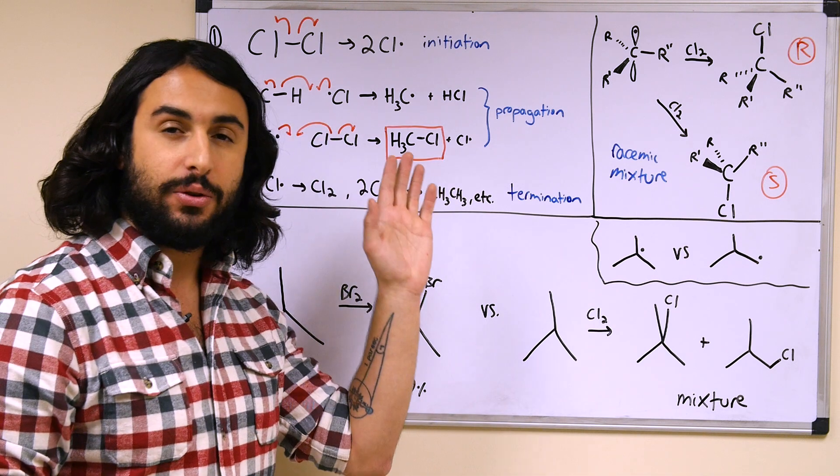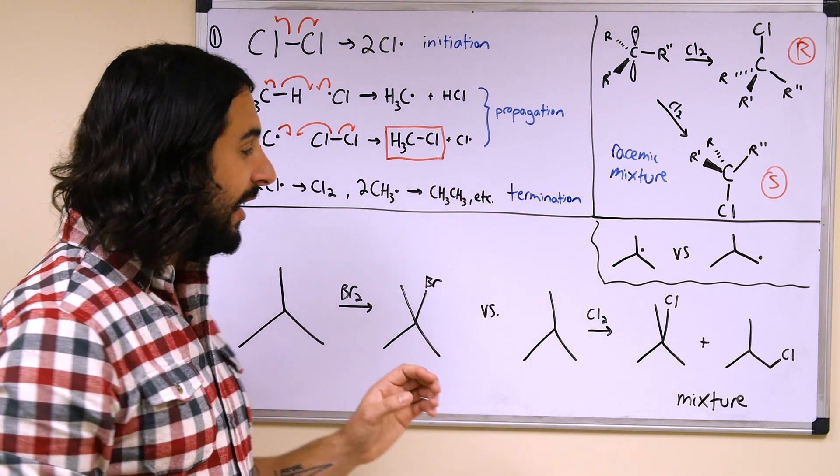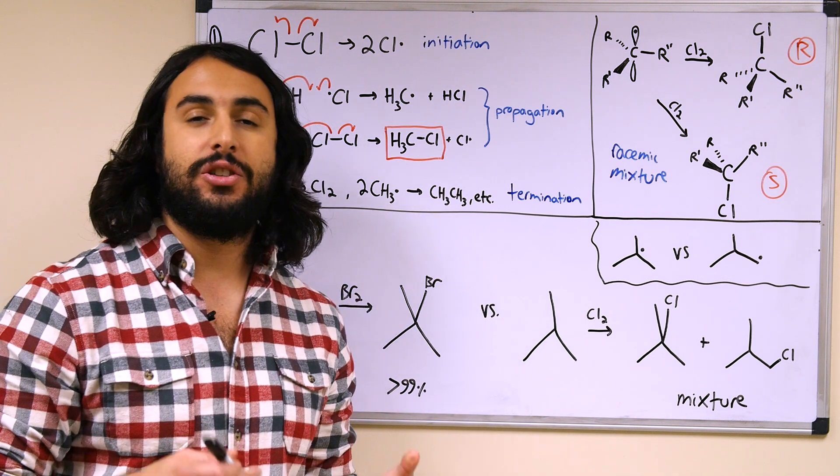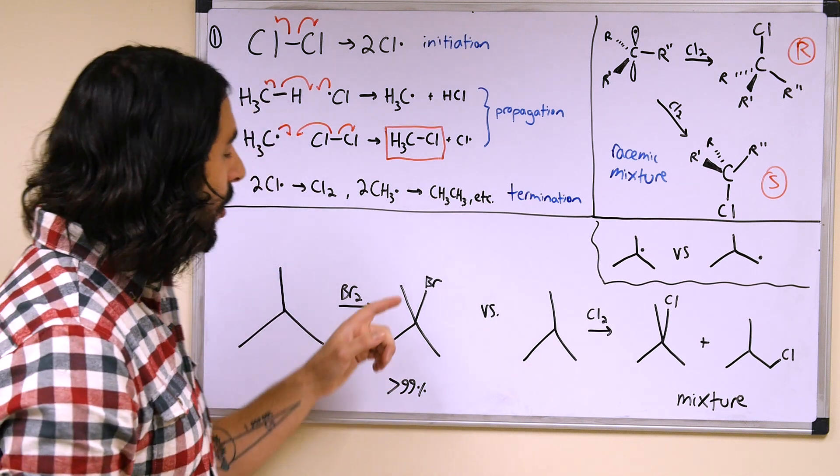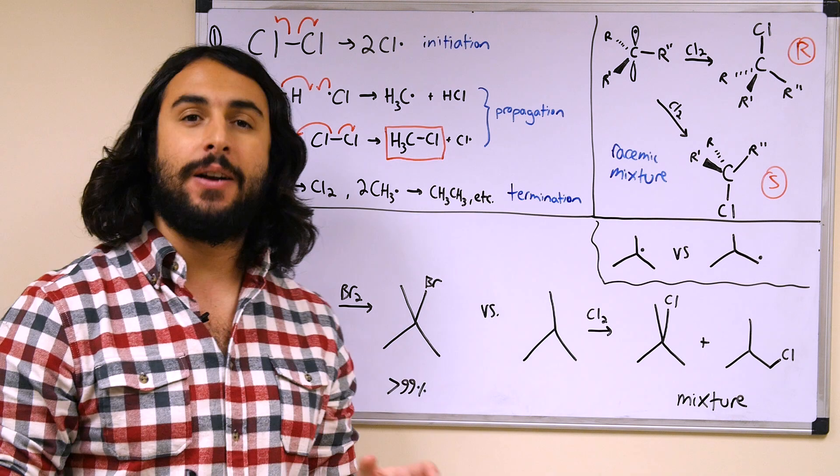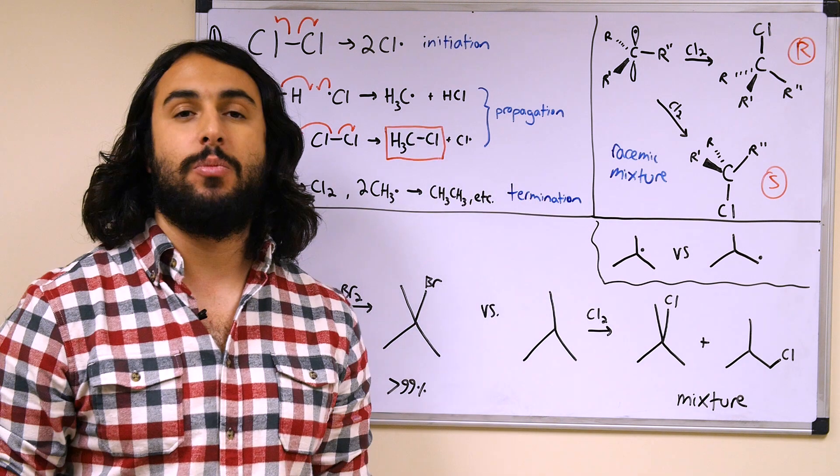Because bromine is a larger atom than chlorine, it can better accommodate the deficiency. It's a larger atom so that's more diffuse around a larger volume.